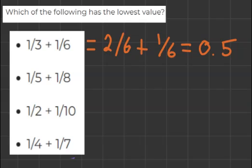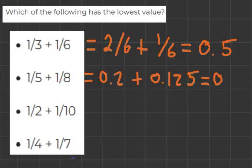The second option, 1 over 5 will equal 0.2 plus 1 over 8 which is 0.125. And together this will equal 0.325.